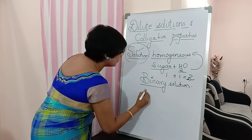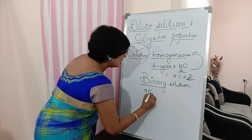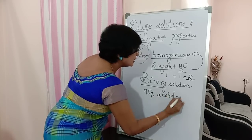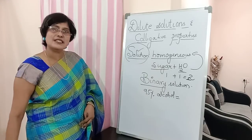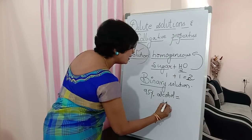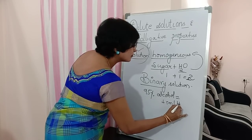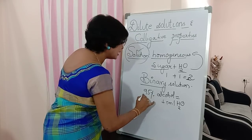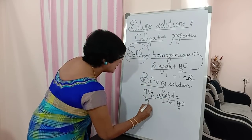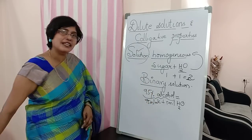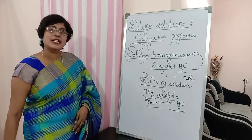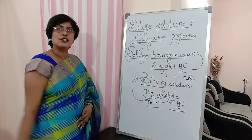One more example: 95% alcohol. What does it mean? It means 95 ml alcohol plus 5 ml water. So 95% alcohol is made of 95 ml alcohol plus 5 ml water — two components again. So this is also a binary solution.